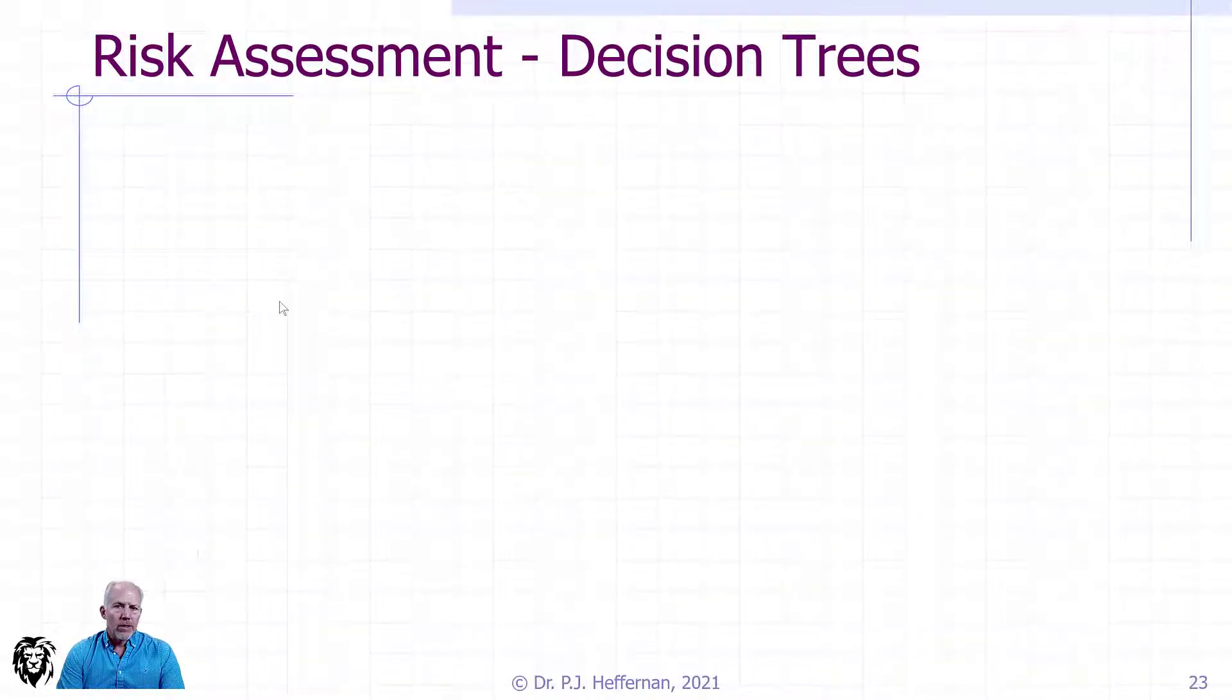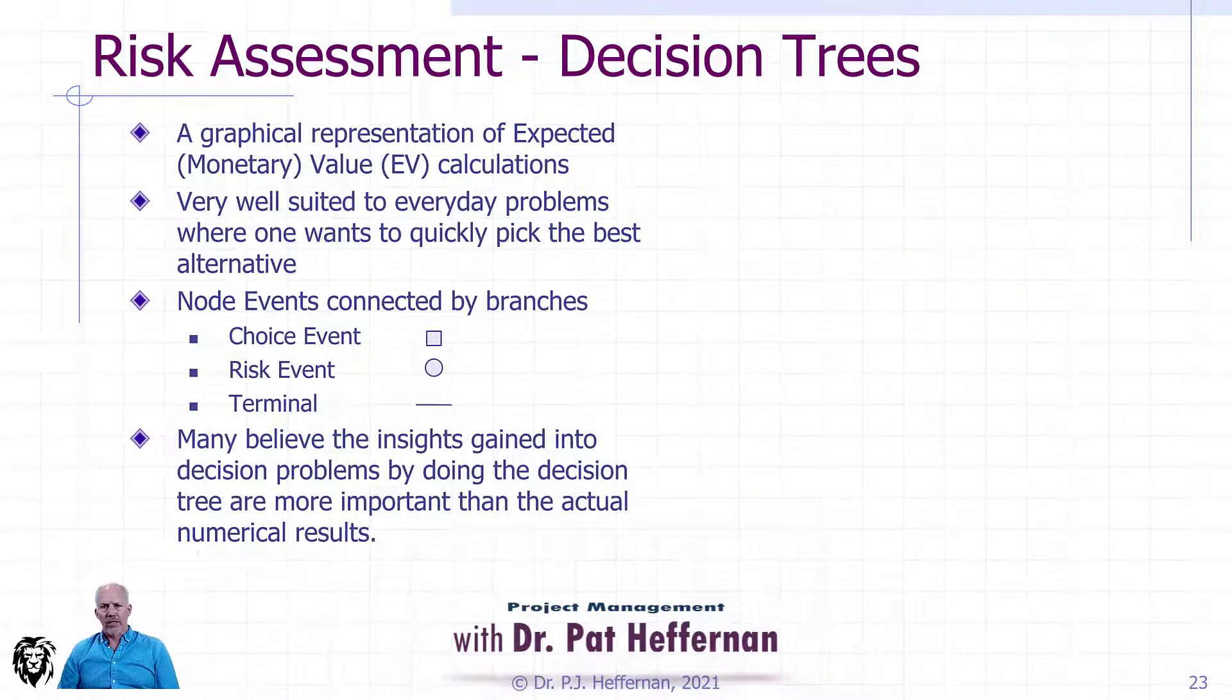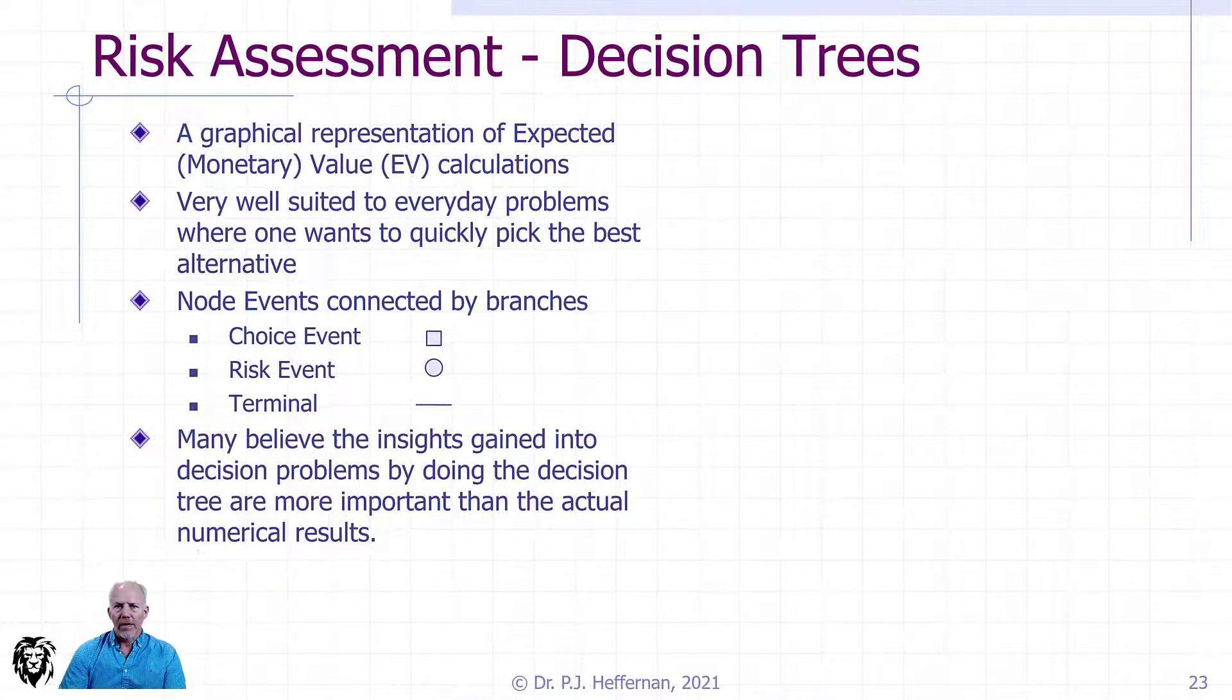The next tool we want to look at for quantitative risk assessment is decision trees. Decision trees use a graphical representation, a tree progression, which denotes choice and equivalent value calculations, which we looked at briefly in the introductory video. They're well suited to everyday problems where we want to pick from one option or another or to compare mitigation strategies and determine whether they're appropriate.